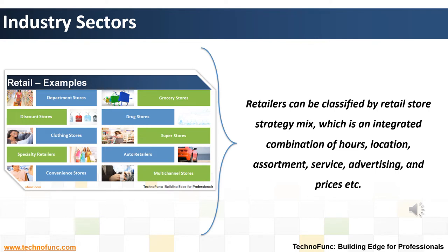Fourth, specialty retailers are retail businesses that focus on specific product categories such as office supplies, men's or women's clothing, or carpet. Fifth, convenience stores are small retail businesses that stock a range of everyday items. Sixth, grocery stores are retail shops that primarily sell food, offering non-perishable foods packaged in bottles, boxes, and cans. Seventh, drug stores are stores that sell health care products and medicine.